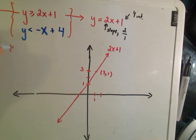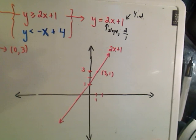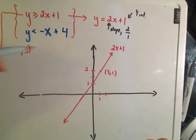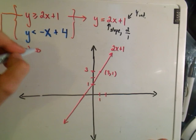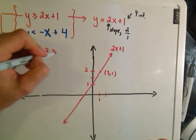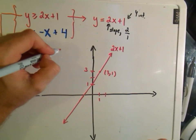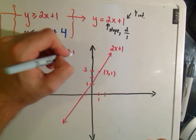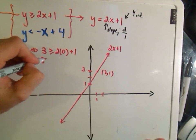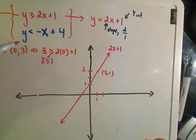So notice if I take the point 0 comma 3, that's going to be a point on this side of the line. If I plug that into my inequality, I have to ask myself, is it true? So if I plug 3 in for y, I have to ask myself, is that greater than or equal to 2 times 0? So I'm plugging 0 in for x, plus 1. Well, yes, because 3 is greater than or equal to 1.